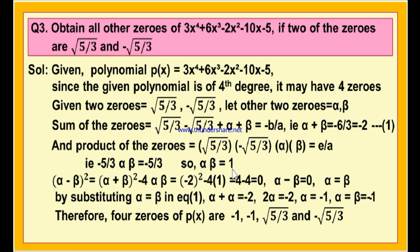Alpha times beta equals 1 and alpha plus beta equals -2. From these two, let us find the alpha minus beta value. We know that (α - β)² = (α + β)² - 4αβ. Substituting: (-2)² - 4(1) = 4 - 4 = 0. Therefore alpha minus beta whole square is 0, and alpha minus beta is also 0. This means alpha is equal to beta.